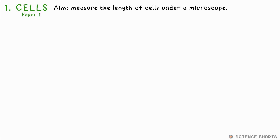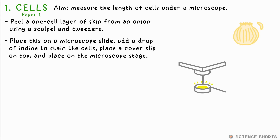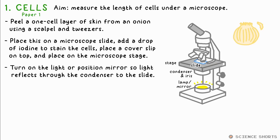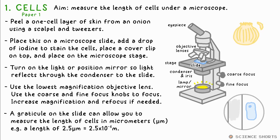Biology 1: cells and microscopes. Usually, you'll get a thin layer of onion skin using a scalpel and tweezers. Place it on the microscope slide. Add a drop of iodine to stain the cells so they're more visible and place a cover slip on top. Place the slide on the stage. Turn the microscope's light on, or if it's a mirror, tilt it so it reflects up the condenser to the slide. Start with the shorter objective lens — the smallest magnification — use the coarse focus knob then the fine focus knob to move the stage until the specimen is in focus, then change to a higher magnification objective lens and refocus if needed. You could have a tiny graticule — a tiny ruler that sits on the slide — that lets you measure the size of cells in micrometres. Micro is ×10⁻⁶ in standard form, so a cell length of 2.5 micrometres is 2.5 × 10⁻⁶ metres.